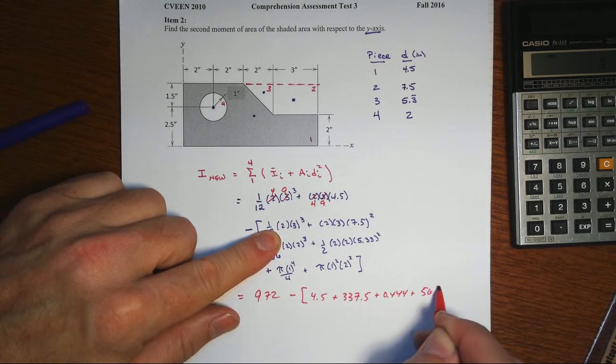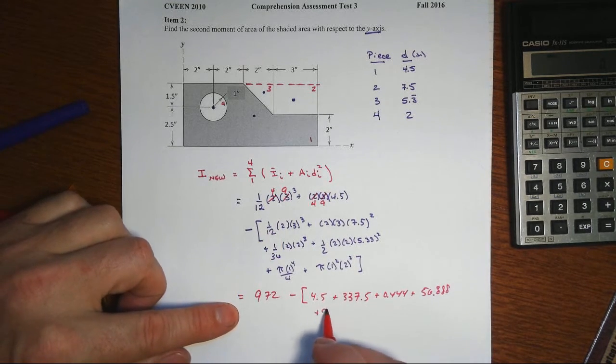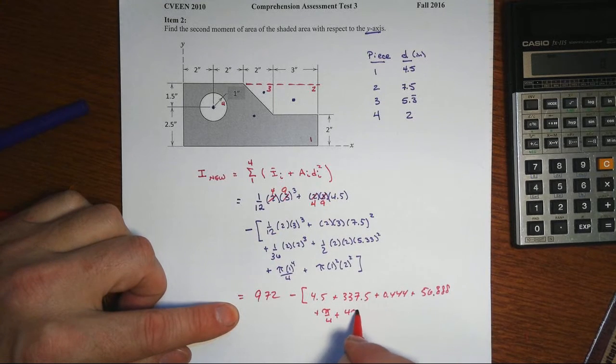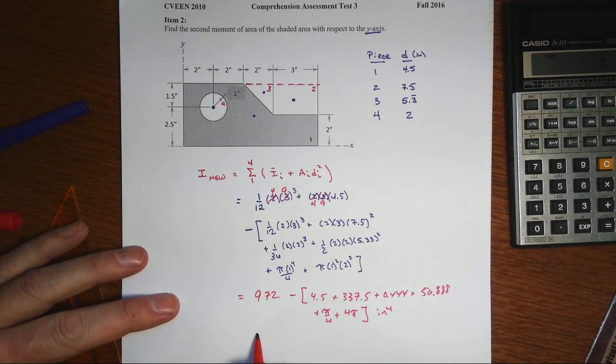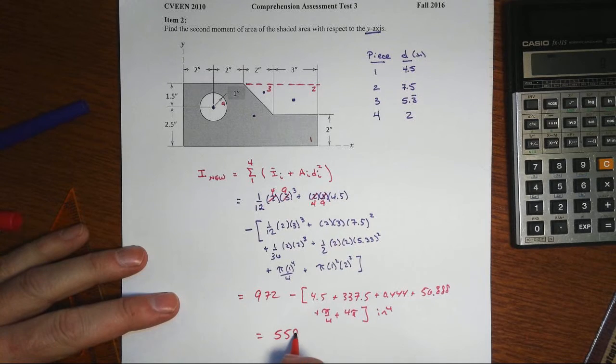56.888, plus π/4, plus 4 times π. This is all inches to the fourth. And the net on that will be about 559 inches to the fourth.